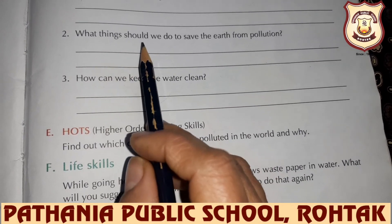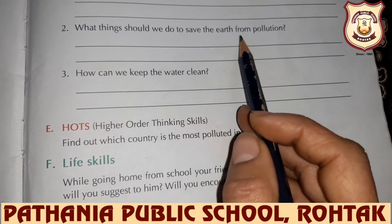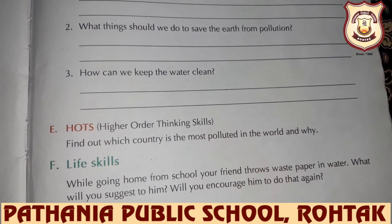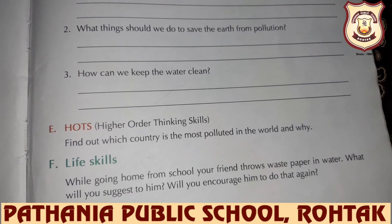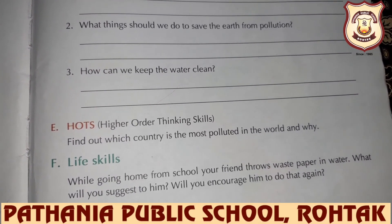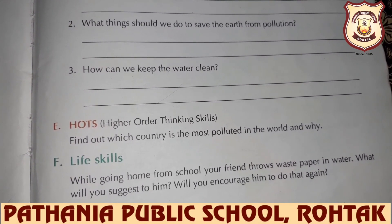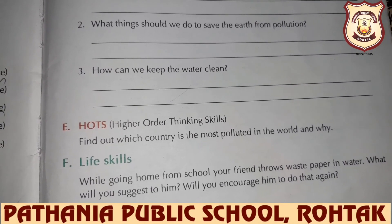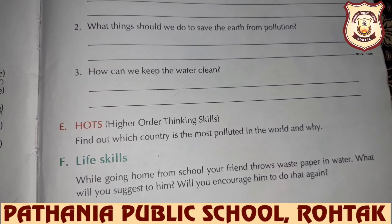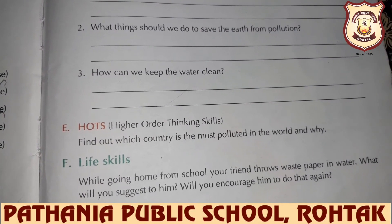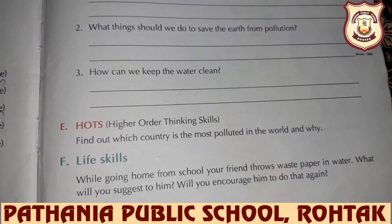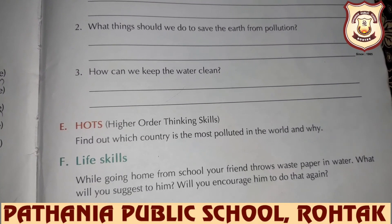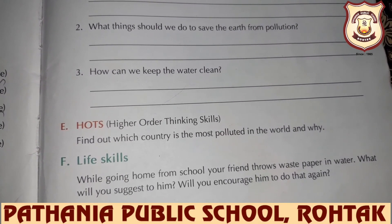Question number two: what things should we do to save the Earth from pollution? What steps can we take? We can plant trees, we can reduce the usage of natural resources, we can stop throwing waste into water bodies, we can save electricity, and we can save water.